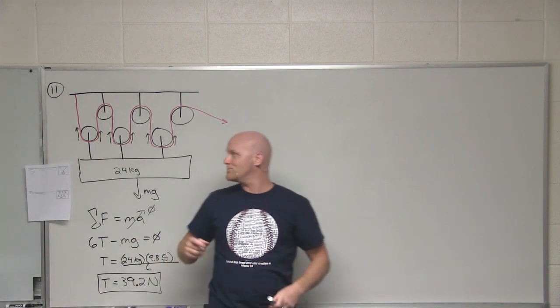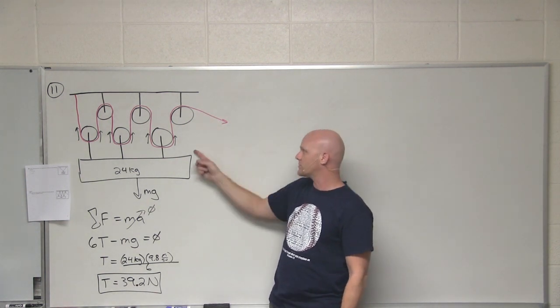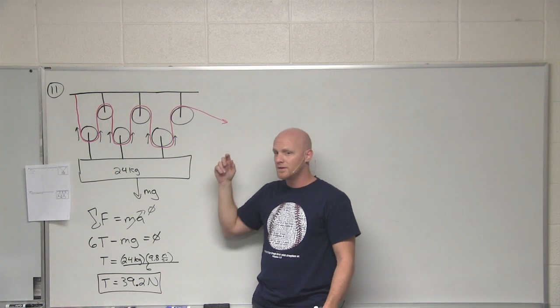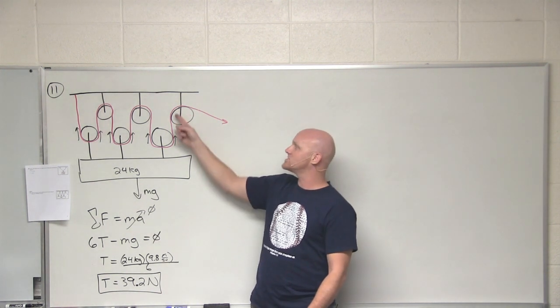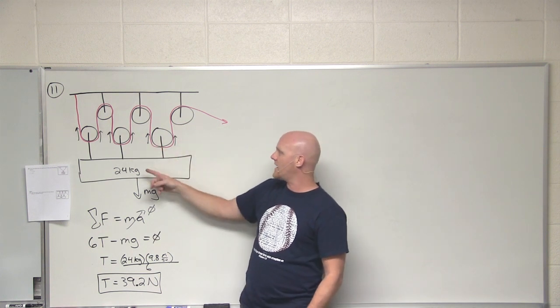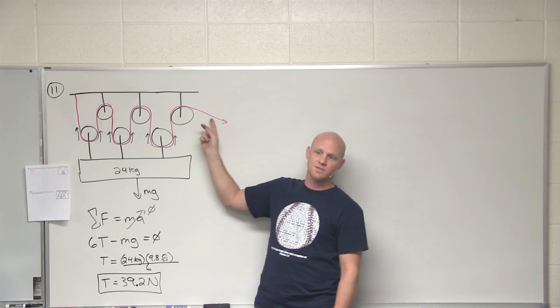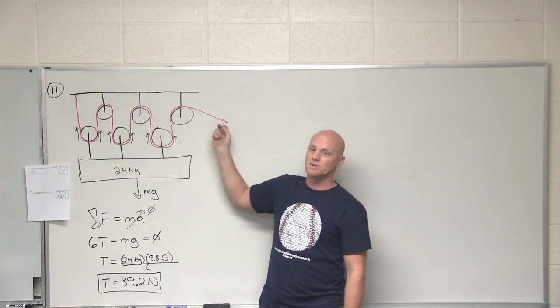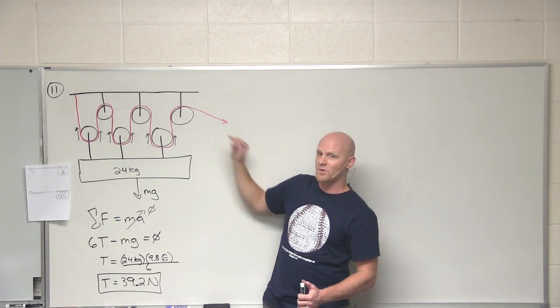Now one thing to note. Does it matter which way I pull on the end of this rope? What if I pull horizontal? What if I pull straight down? What if I pull at this angle that's shown? It doesn't. The only thing accomplished by pulling here is putting a tension in that rope. And the tension only acts on the mass at these points, and it's perfectly vertical regardless of what direction I pull on the end here. So it does not matter whatsoever. I just need to get a tension of 39.2 Newtons in that rope.